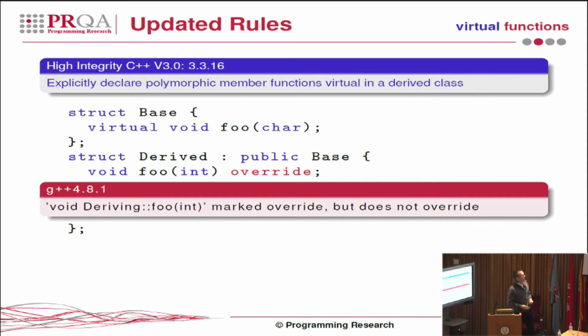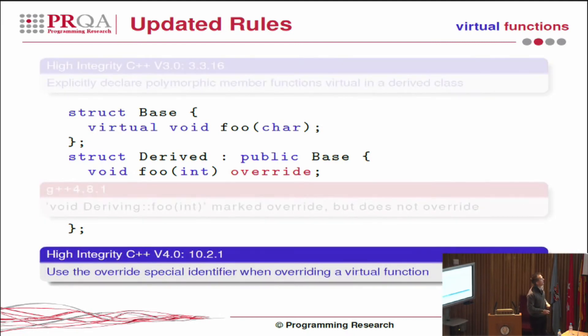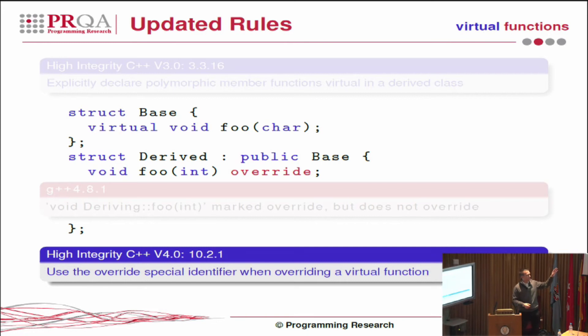GCC points out to us that we've marked it as override and it doesn't override. And we can see the new rule text saying that you should use this override special identifier.